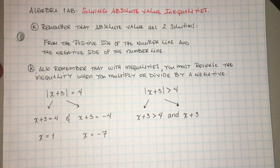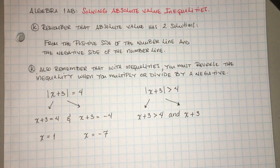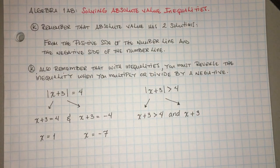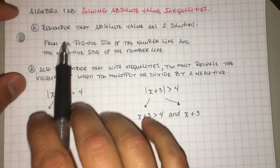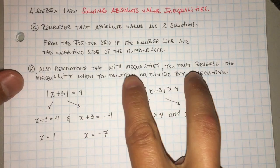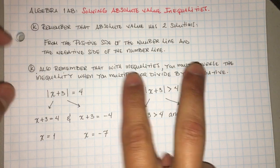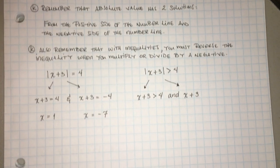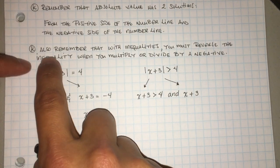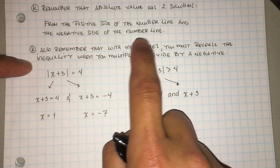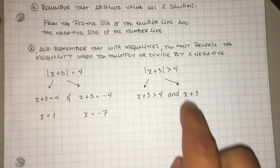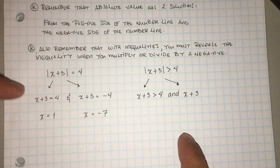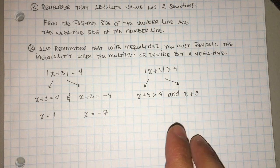Hey guys, in this video we're going to talk about solving absolute value inequalities. En este video vamos a estar hablando sobre resolviendo inigualdades en valor absoluto. Now there's two things you got to remember. First, absolute value has two solutions — one from the positive side of the number line, one from the negative side. Second, when you multiply or divide by a negative, you have to reverse the inequality. Cuando se multiplica o se divide por un negativo, la inigualdad tiene que cambiar dirección.